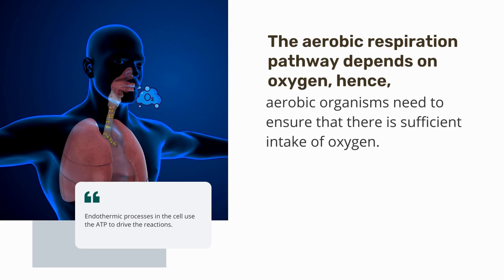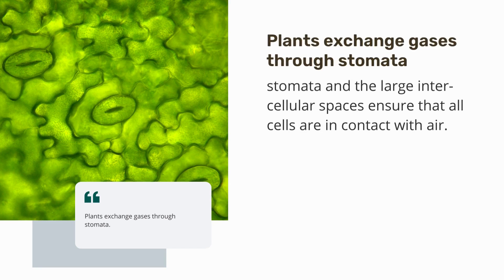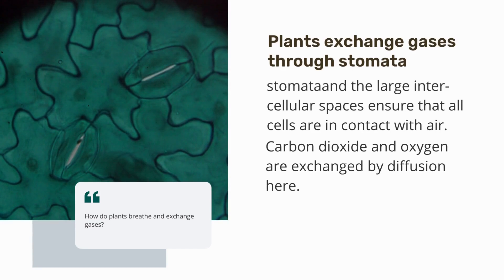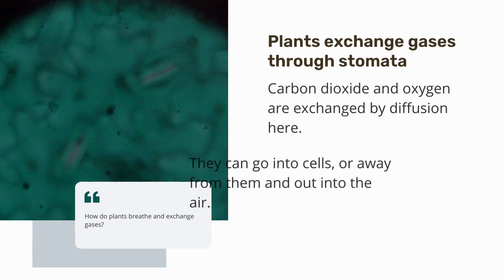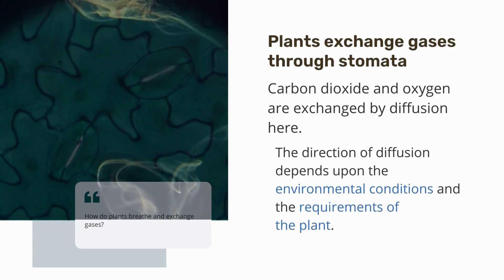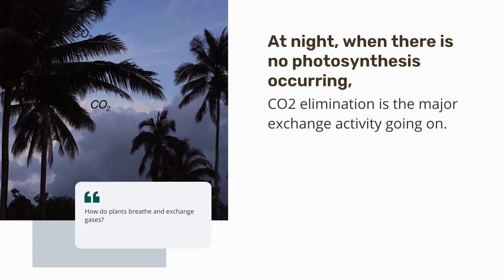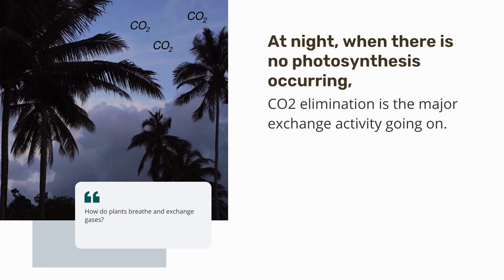Since the aerobic respiration pathway depends on oxygen, aerobic organisms need to ensure sufficient intake of oxygen. Plants exchange gases through stomata, and the large intercellular spaces ensure all cells are in contact with air. Carbon dioxide and oxygen are exchanged by diffusion — they can go into the cells or out into the air. The direction of diffusion depends on environmental conditions and the requirements of the plant. Carbon dioxide is the major exchange activity going on.